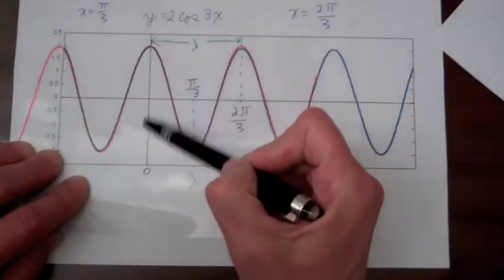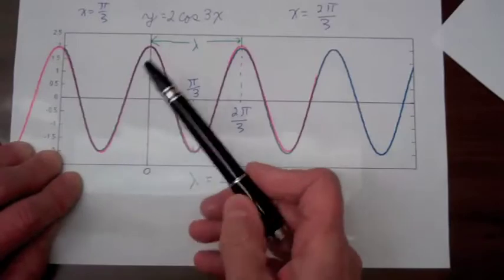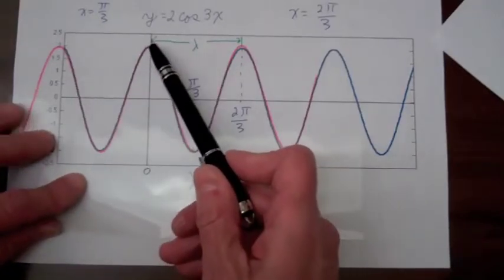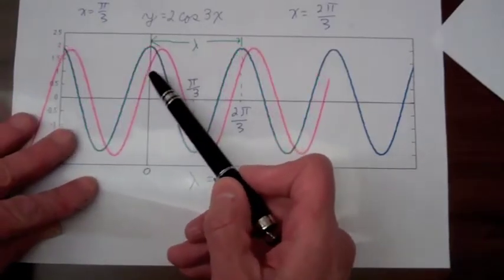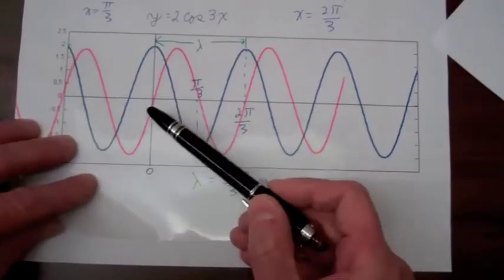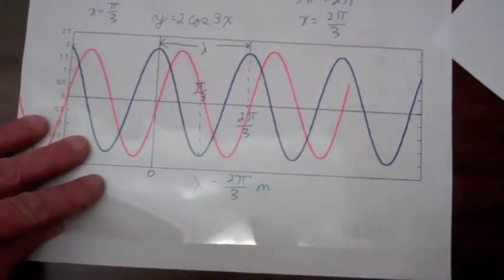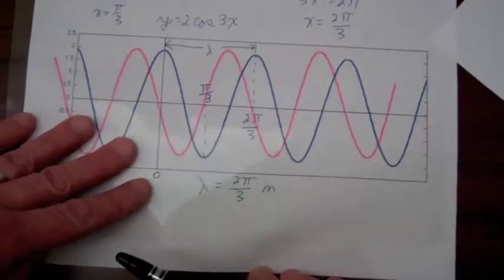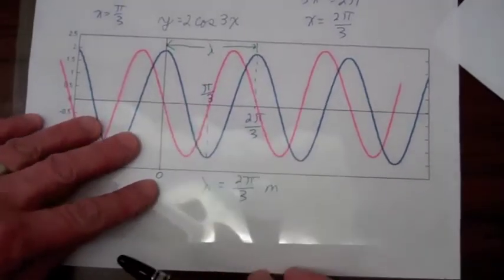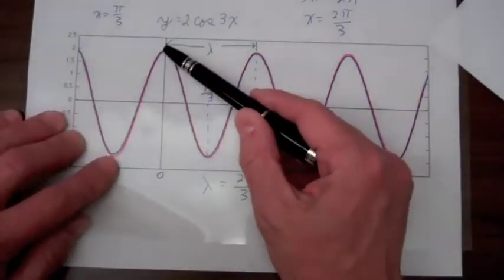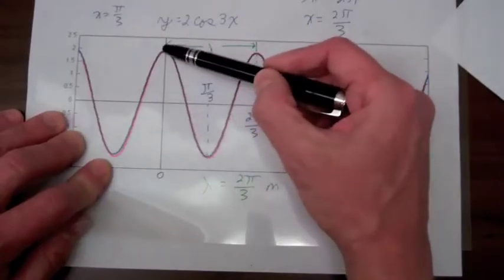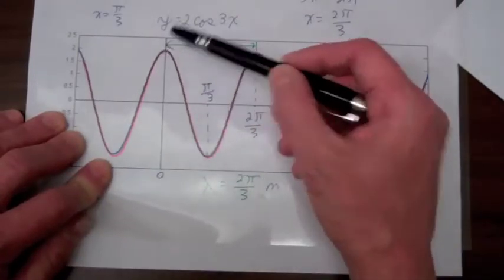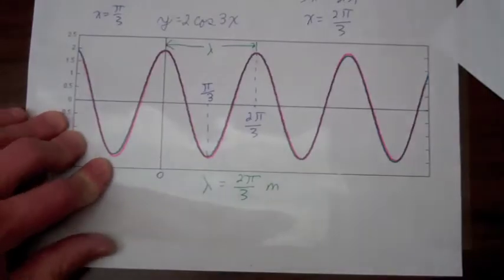Looking at x = 0 as our wave is propagating, at this point it has a value of 2, decreasing to 0, decreasing to -2, increasing to 0, increasing back to 2. The time it takes to oscillate from 2 to -2 and back is called the period of the wave.